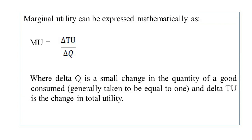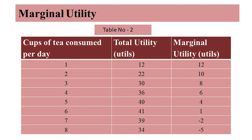Marginal utility can also be expressed mathematically as MU = ΔTU / ΔQ, where ΔQ is the small change in quantity consumed — generally taken as 1 — and ΔTU is the change in total utility. From table number 2, when the consumer takes 2 cups instead of 1 cup, total utility increases from 12 to 22 utils, so the marginal utility of the second cup of tea is 10 utils.